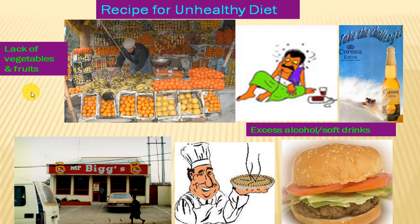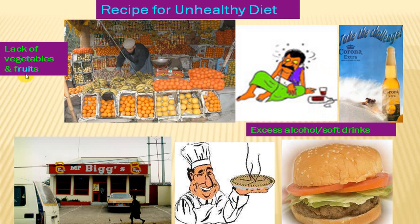In cardiometabolic syndrome we see: insulin resistance, obesity, hyperglycemia, hypertension, endothelial dysfunction, dyslipidemia, pro-inflammatory state, pro-coagulant state, premature atherosclerosis, and coronary artery disease. These are well known to be associated with excessive intake of calories from processed foods, alcohol, soft drinks, and diets lacking vegetables and fruits.